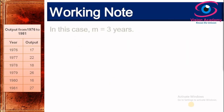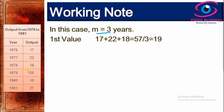Let us have a working note on the given problem. They have asked us to compute three years moving average, so m equals three. For the first value, we consider the first three observations: 17, 22, and 18, which total 57. Since we are calculating an average, we divide by 3. So 57 divided by 3 gives us 19 — our first moving average value.